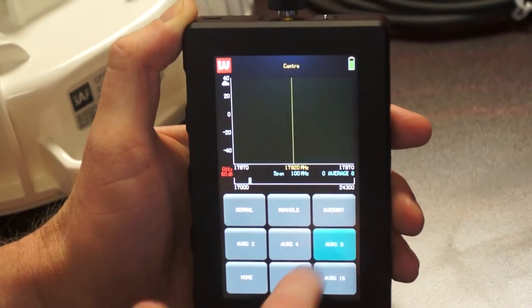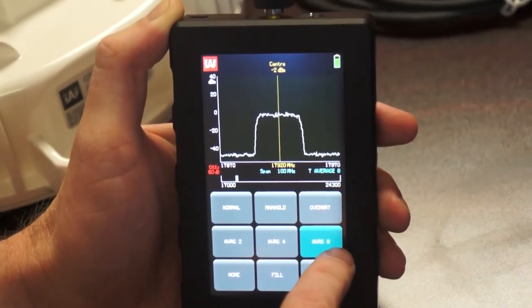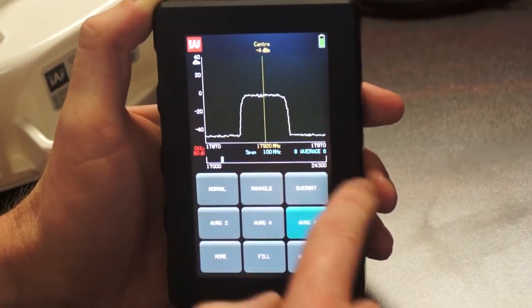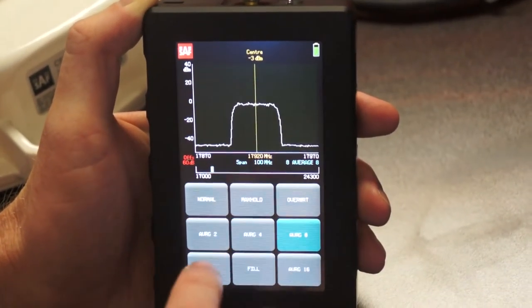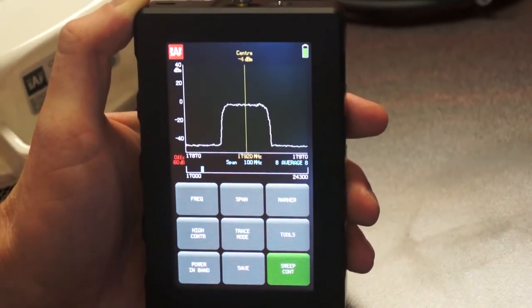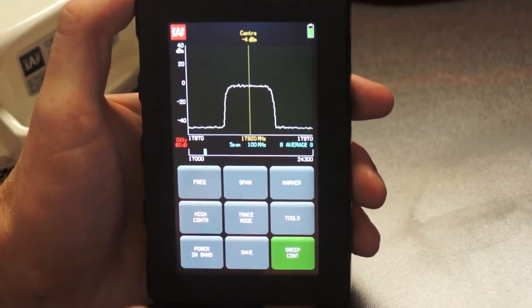Last thing I'll go ahead and do is set the average. What this will do is it'll take eight averages of eight sweeps of the signal and average them together to give me a much cleaner picture of what the radio is actually transmitting. Now before I move forward, there's a couple things I can tell about my radio.